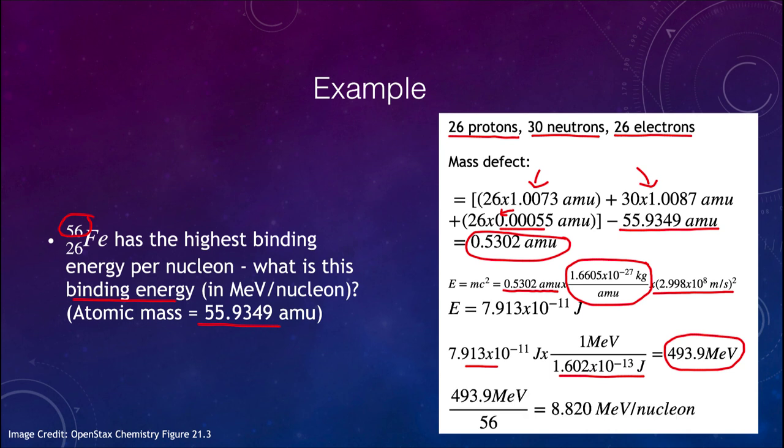Next we divide it by the 56 nucleons. Now remember, when we're doing per nucleon, now we only look at the protons and the neutrons, and that would be 56. We do not combine the electrons, because they are not nucleons. So when we divide it, we find that it is about 8.8 million electron volts per nucleon for the binding energy of iron-56.